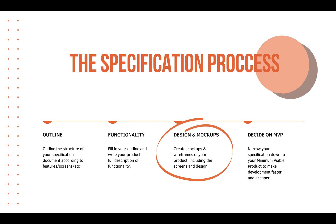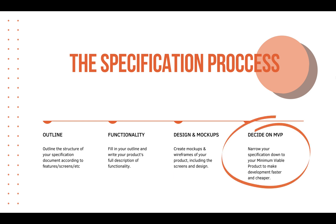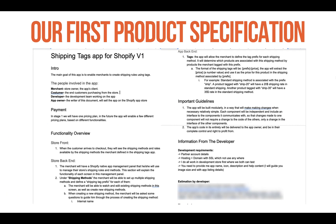The final stage we'll discuss is deciding on the MVP. When writing the specification document, you want to be as detailed as possible and come up with as many ideas as possible — and these documents can get very long. It's crucial to decide on an MVP, narrow down the product to its essentials, and come up with something affordable that lets you launch at a cheaper price to test the water.